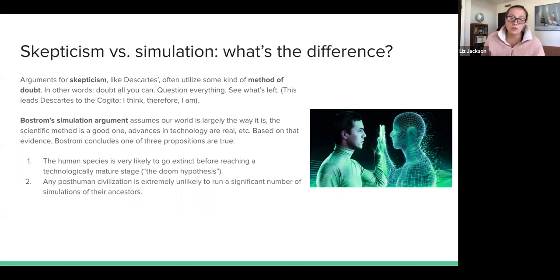Two, any post-human civilization that reaches this technologically mature stage is extremely unlikely to run ancestor simulations. And even if most of them don't want to run ancestor simulations, even if some of them do, a small number of them do, this argument could still go through. And so then three is that we are almost certainly living in a computer simulation. So if you think that the human species is likely to reach a technologically mature stage and some of these post-human civilizations are going to run ancestor simulations, then that means it's very likely we're living in a computer simulation.